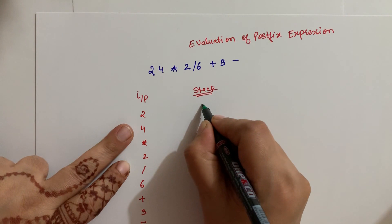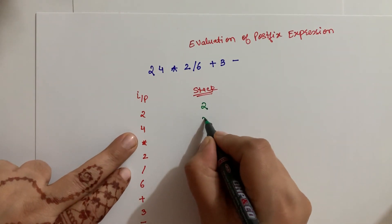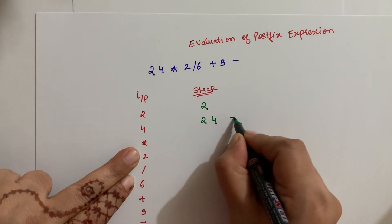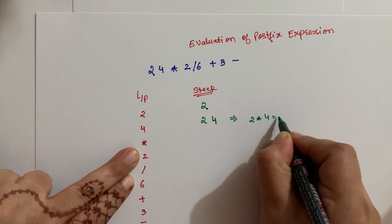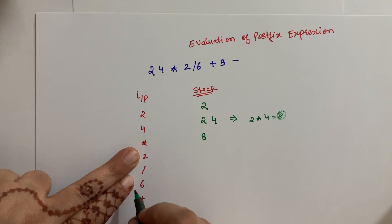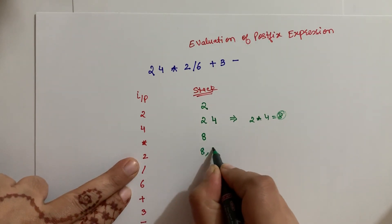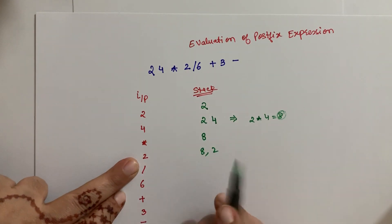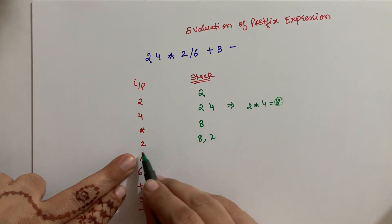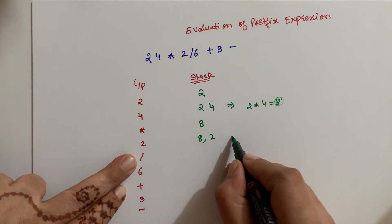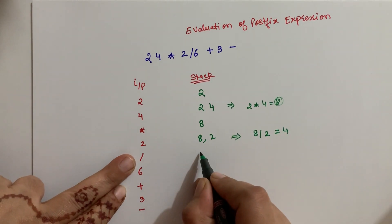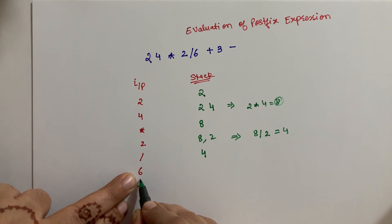2 goes into the stack, then 4 goes in. Next is the multiply operator — so we evaluate 2 into 4, which equals 8. So 8 is now in the stack. Then the next input 2 comes — stack has 8, 2. Then division operator comes — so 8 divided by 2 equals 4. Result 4 is in the stack. Then 6 comes — stack has 4, 6.